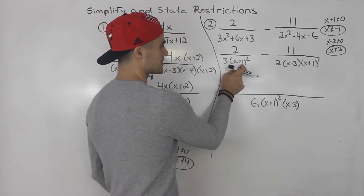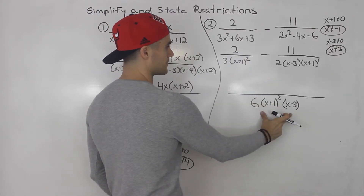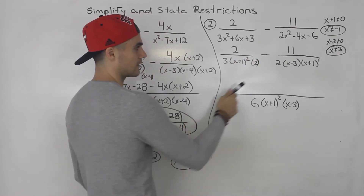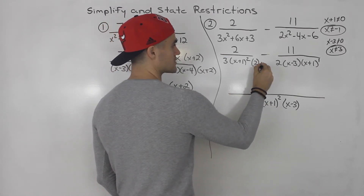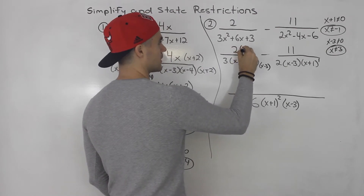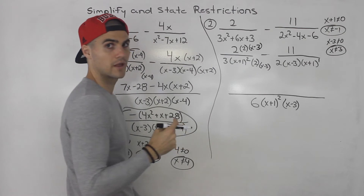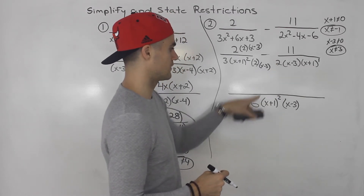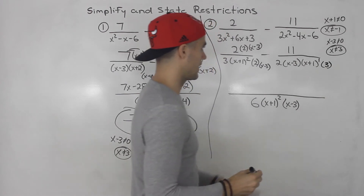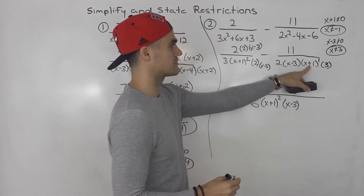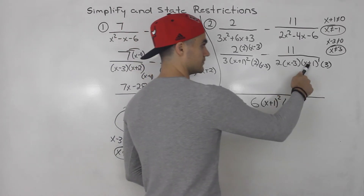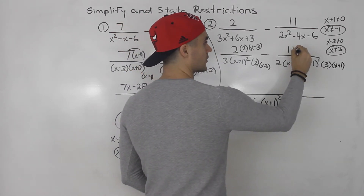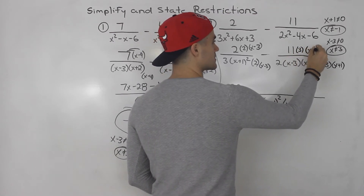For the first fraction with three times x plus one squared, we multiply the three by two and also multiply by x minus three, since x minus three is not present. So the top is multiplied by two and by x minus three. For the second fraction with two times x minus three times x plus one, we multiply the two by three, x minus three is already there, and we multiply x plus one by x plus one to raise it to the power of two.